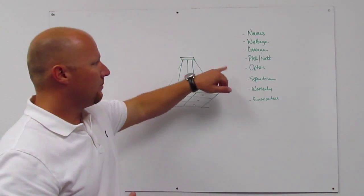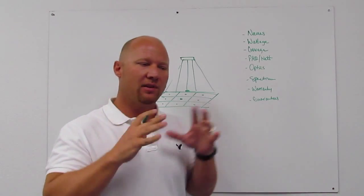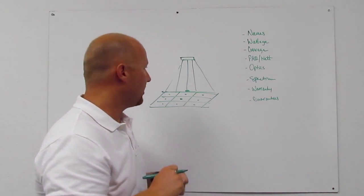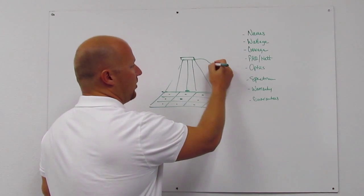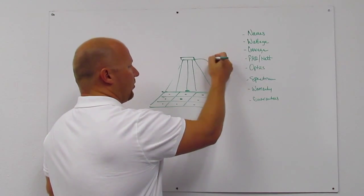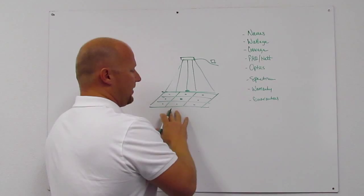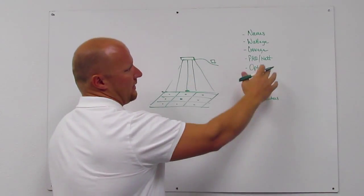Then we divide that by the running watts. Not what the light's called, not the name, not what it says on the light. We actually run it from the wall. So we'll use the meter, the running watts, and we divide the total PAR by the running watts. And that gives us the PAR per watt.